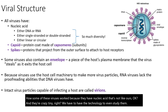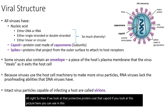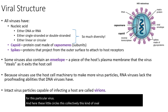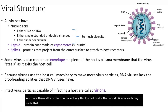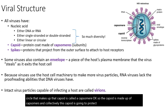If we look at that protective protein coat — the capsid — in this picture you can see two pieces of RNA as the nucleic acid for this particular virus. These little circles collectively forming this oval shape is the capsid. Each tiny circle that makes up the capsid is called a capsomere. So the capsid is made up of capsomeres, and collectively this capsid protects that nucleic acid.